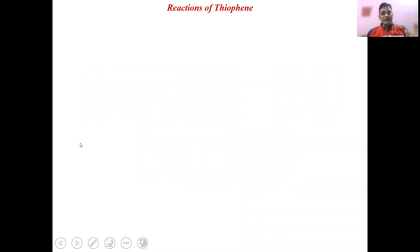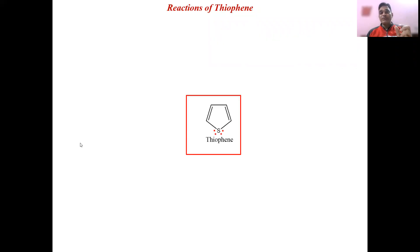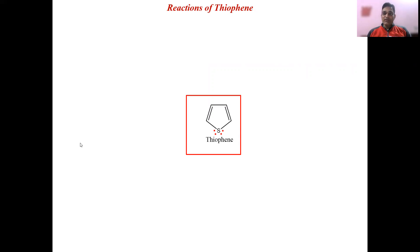Thiophene is also a heterocyclic compound. The hetero atom in thiophene is sulfur. The word 'thio' is used for sulfur. Sulfur belongs to Group 16 — it is just below oxygen in the periodic table. Just as we showed lone pairs on oxygen, we show two lone pairs on sulfur as well, because Group 16 elements have six valence electrons, and sulfur uses two for bonding.